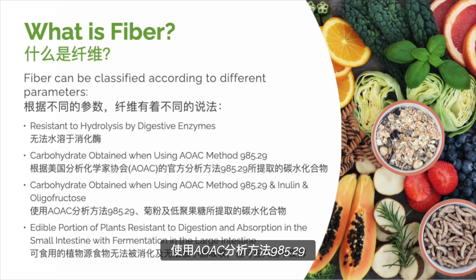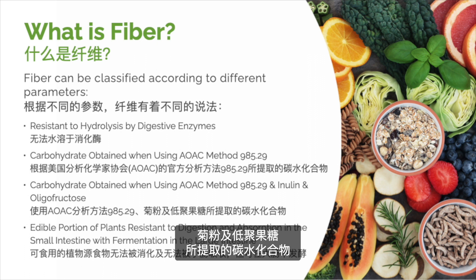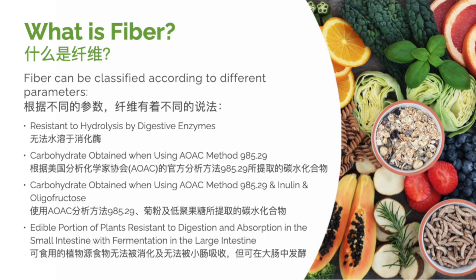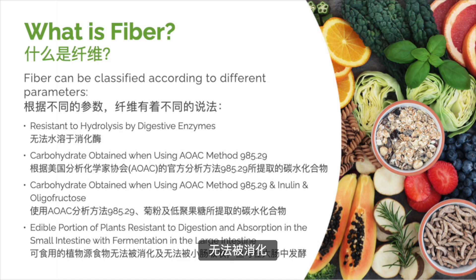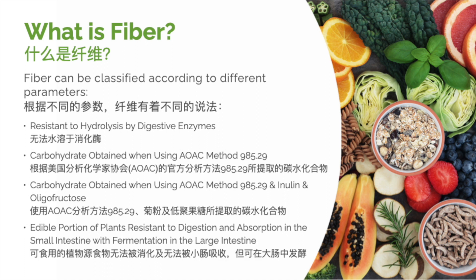Or that part of a carbohydrate obtained analytically by AOAC method 985.29 and inulin and oligofructose, or finally, the edible part of plants or analogous carbohydrates that are resistant to digestion and absorption in the small intestine with complete or partial fermentation in the large intestine. These definitions may seem confusing and even insignificant, but they derive from specific research on the origin of fiber, the way humans respond metabolically to fiber, and the health benefits that we observe and expect from consuming fiber.